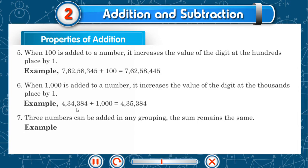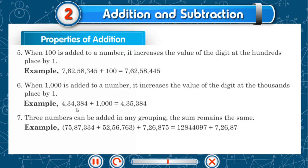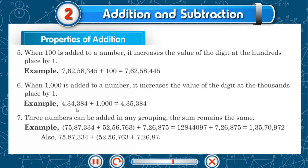Three numbers can be added in any grouping and the sum remains the same. Example: (75,87,334 plus 52,56,763) plus 7,26,875 is equal to 1,28,44,097 plus 7,26,875, which equals 1,35,70,972. Also, 75,87,334 plus (52,56,763 plus 7,26,875) is equal to 75,87,334 plus 59,83,638, which is equal to 1,35,70,972.